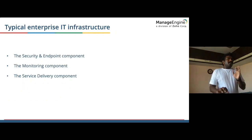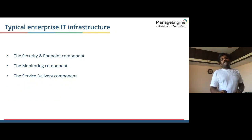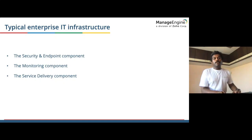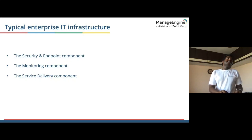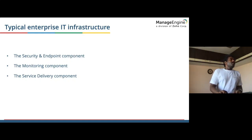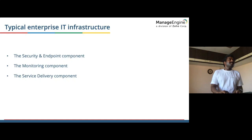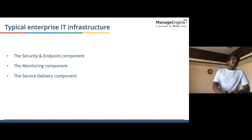A typical enterprise IT infrastructure has three components: the security and endpoint monitoring component, the monitoring component, and the service delivery component. Which of these IT processes do you think will reap most of AI's benefits? These inputs could really help us prioritize the next big thing we're going to work on.